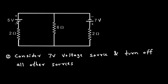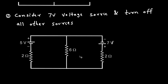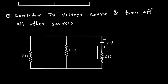When we turn off all other sources, that means we have to turn off the other voltage source. When we turn off a voltage source, we have to replace it by a short circuit. The positive terminal is here, so the direction of current will flow accordingly. Let's call this current I1, and the current through the 6 ohm resistor in this step is I prime.